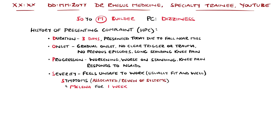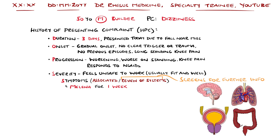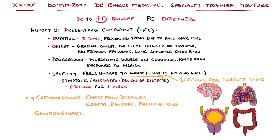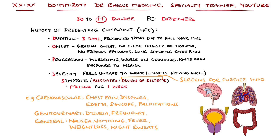In our case, asking about a change of bowel habit reveals the presence of melaena — that is black stools. Bear in mind each specialty will have points that are particularly relevant for them. For example, general cardiovascular screening questions include any chest pain, shortness of breath — including orthopnea or paroxysmal nocturnal dyspnea — ankle swelling, lightheadedness or syncope, or palpitations. Other systems histories include any urinary symptoms like dysuria, incontinence or frequency, and more general features like nausea, vomiting, systemic features like fever, unexplained weight loss, or night sweats.